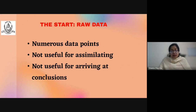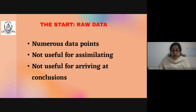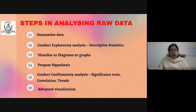Statistical analysis starts with raw data. In the beginning, we have a random set of numbers obtained as a result of our observations — these are called data points. Raw data has a number of data points, but it is not useful for assimilating information for the reader and not useful for arriving at any conclusions. We must therefore follow certain steps in analyzing raw data, the first of which is to summarize the data by arranging it in a certain order or in groups.